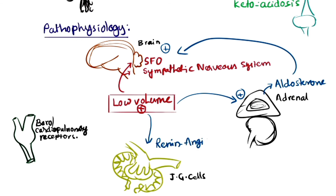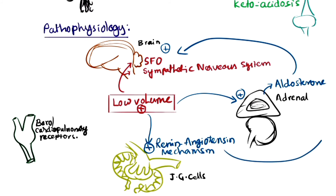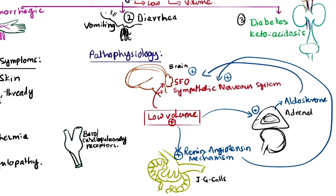Aldosterone also acts on the juxtaglomerular (JG) cells to improve sodium retention. Low volume stimulates the renin-angiotensin mechanism. Renin is secreted from the afferent arterioles of the juxtaglomerular cells, which triggers multiple responses across multiple organs to retain ECF at normal levels. The renin-angiotensin mechanism also acts on the sympathetic nervous system to bring ECF back to normal.